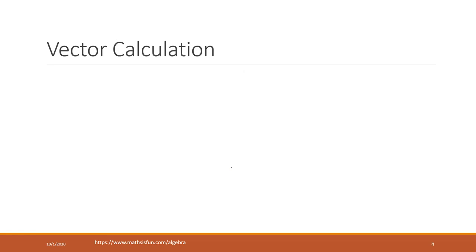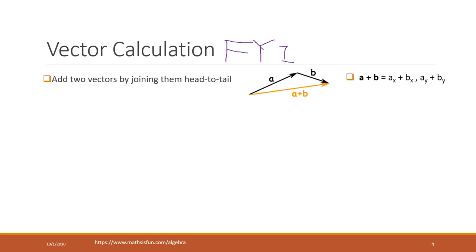Here are some basic vector calculations — we use these a lot when trying to find the best parameters using gradient descent. The first is vector addition. To calculate vector A plus vector B in two-dimensional space, we add the X coordinates together and the Y coordinates together to get the new coordinates for the new vector A plus B.